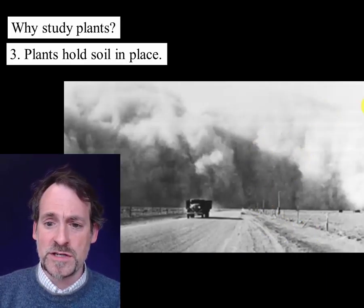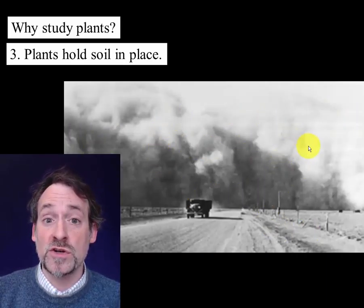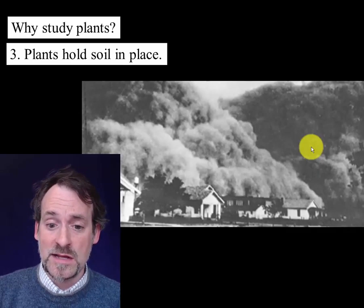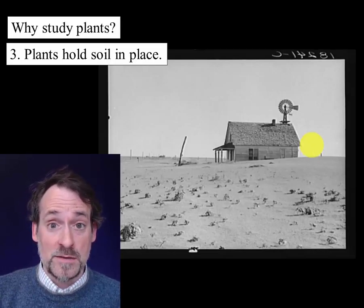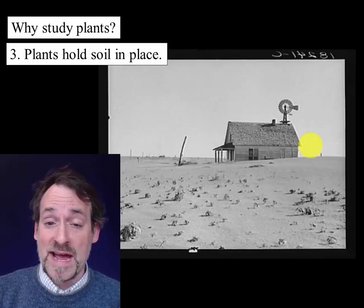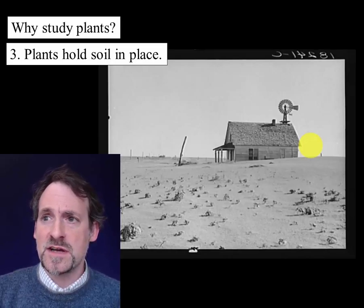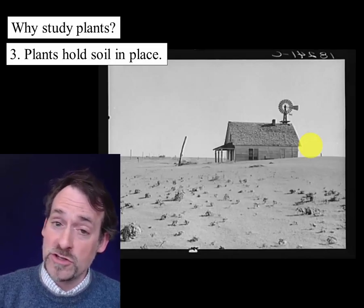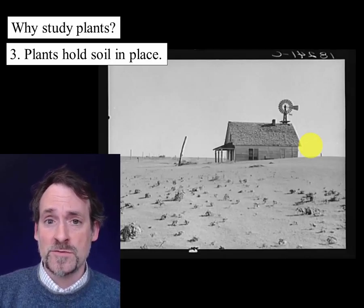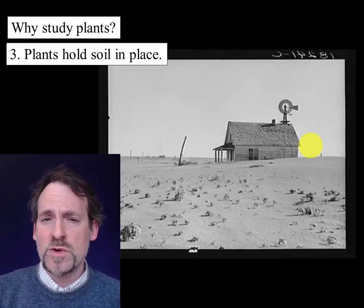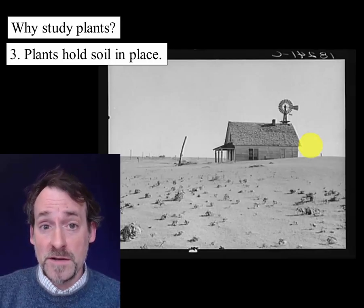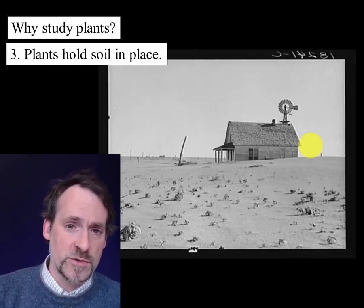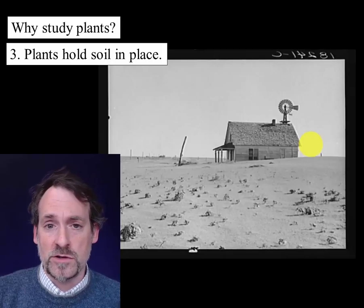Here are clouds of wind-blown dust overtaking a car. Here they are overtaking an entire town. And here's the wasteland that resulted after all of the soil had blown away. Again, this is something that only happens when you strip away all of the plants from an ecosystem. So one of the ecosystem services plants provide for us is healthy soil in which we can grow crops.